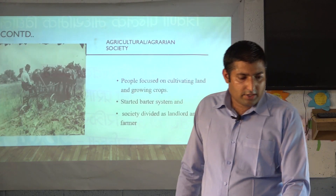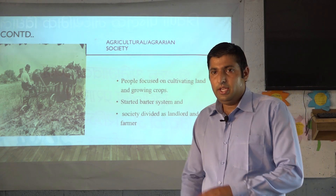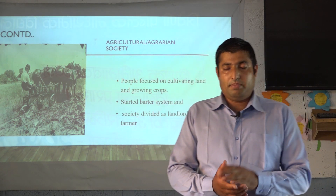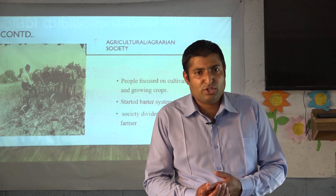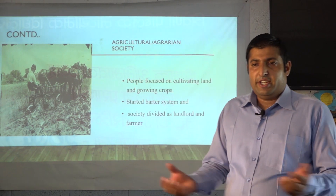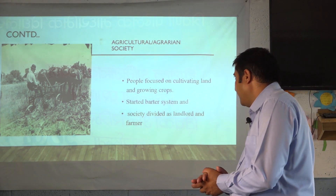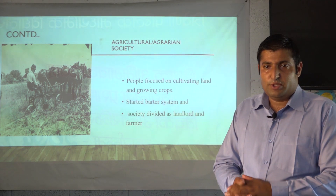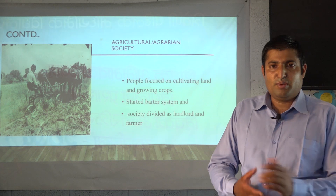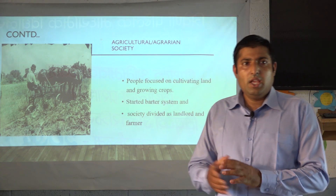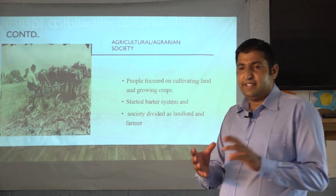After the horticultural society, the agricultural stage of society started. People cultivated the lands and produced crops in large quantity. Gradually they started to share and sell to each other, and the barter system came into existence. The barter system means exchanging goods with goods. Those who produced more crops used to share or exchange them with others in exchange for goods.